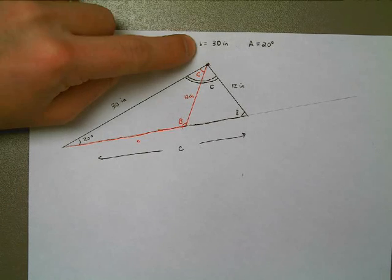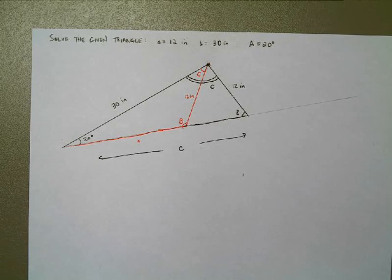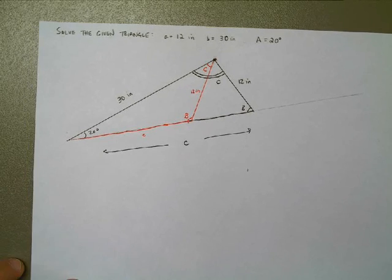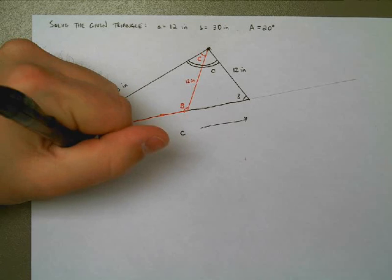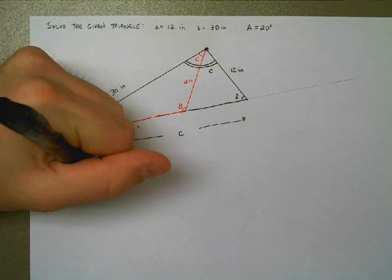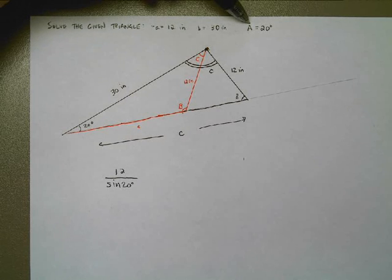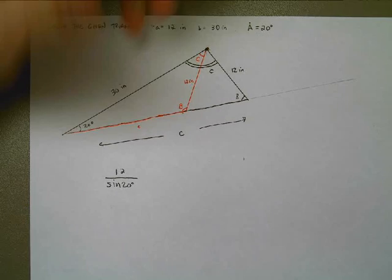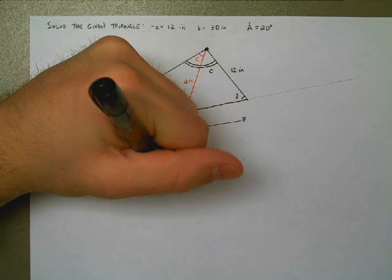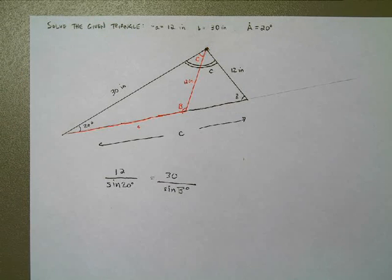So here's what I'm going to do. I've been given little a, little b, and big A. So I know if I use the law of sines, I should be able to set up a ratio that looks like this. 12 over the sine of its opposite angle. Little a over the sine of big A is equal to little b, 30, over the sine of angle b.